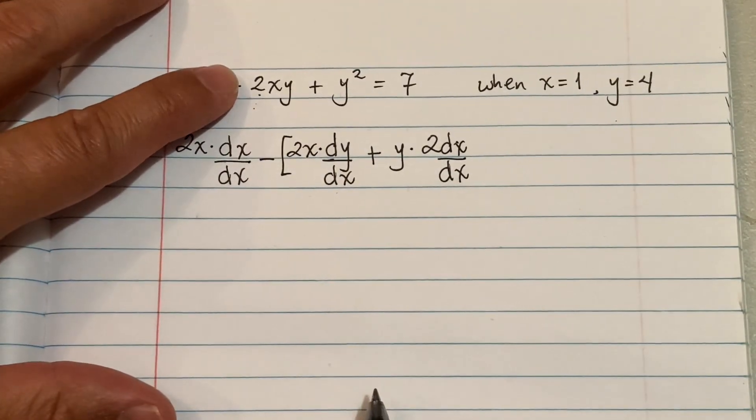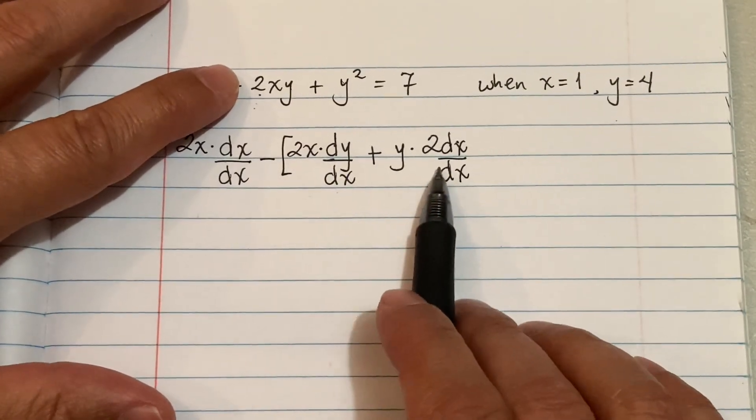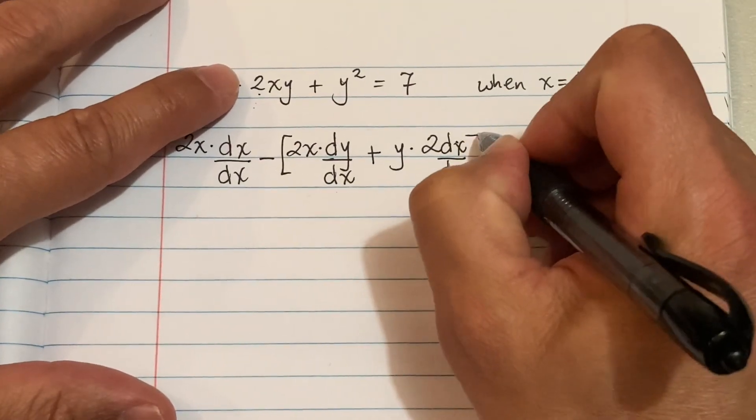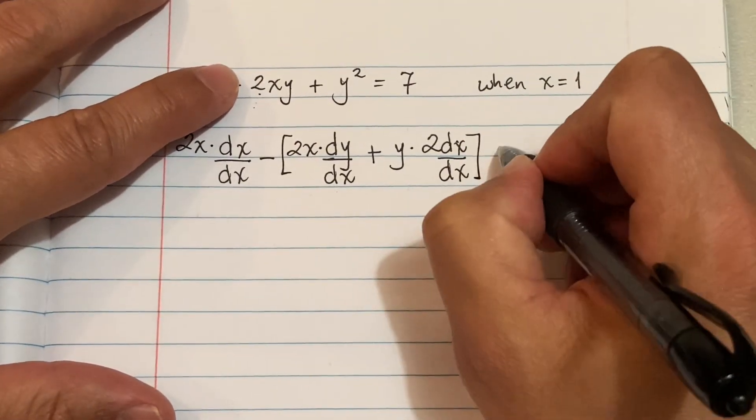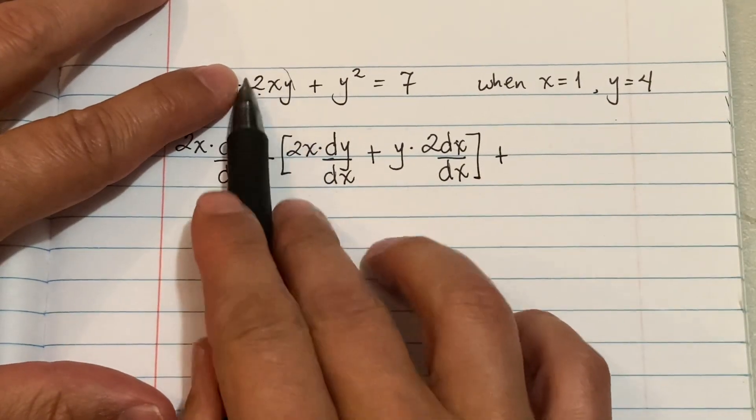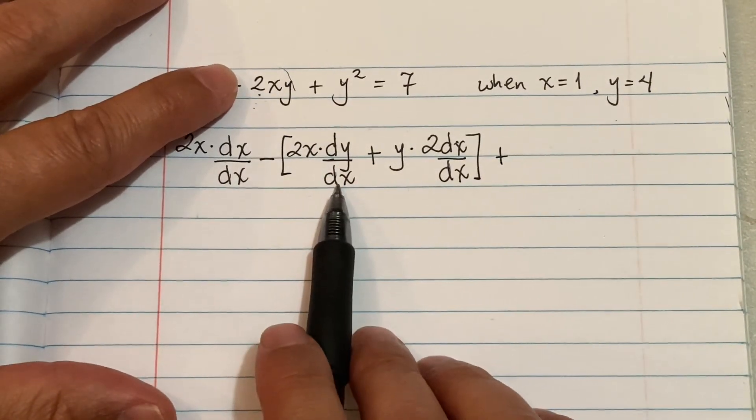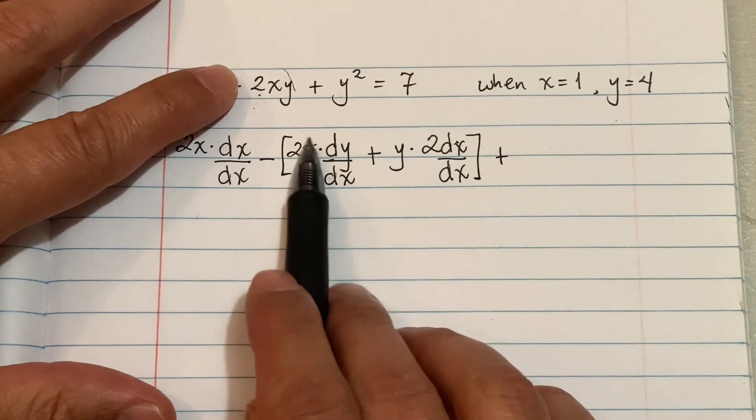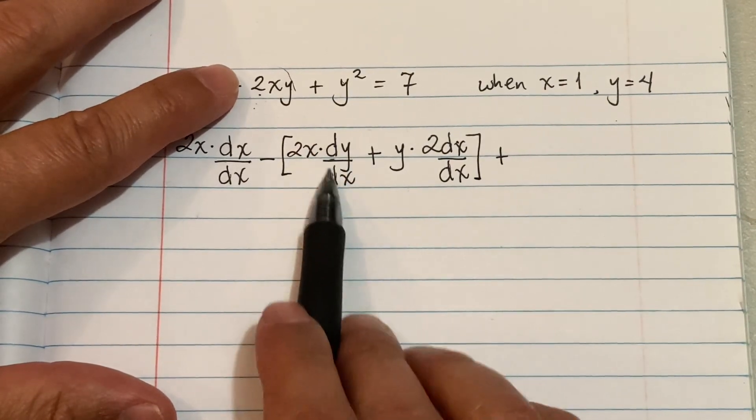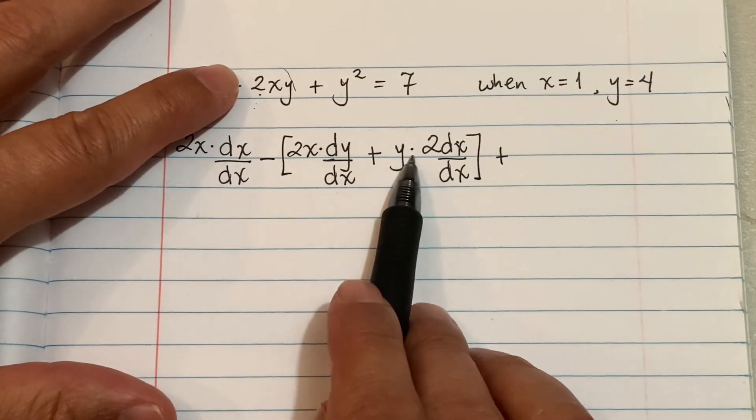So then I'm gonna go ahead and close it off. So this is just a product rule and you will get that on the AP exam. First times the derivative of the second plus the second times the derivative of the first.